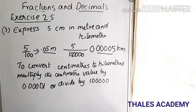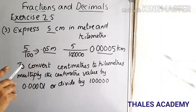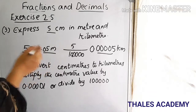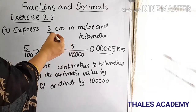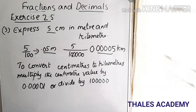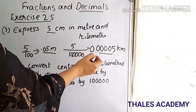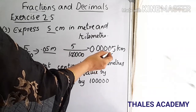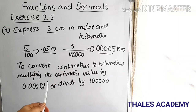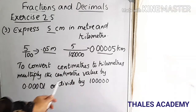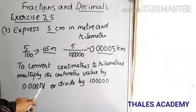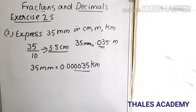The next question is to express 5 centimeters in meters and kilometers. To change 5 centimeters into meters, we divide 5 by 100 and get 0.05 meters. To change 5 centimeters into kilometers, we divide 5 by 1 lakh and get 0.000005 kilometers. To convert centimeters to kilometers, multiply the centimeter value by 0.00001 or divide by 1 lakh.